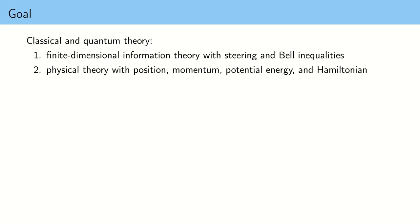There are two facets of classical and quantum theory that we usually work with. There is the finite dimensional information theory where we usually investigate steering and Bell inequalities, and then there is the physical theory with position, momentum and Hamiltonians where we investigate physical properties such as tunneling.